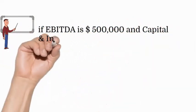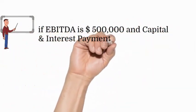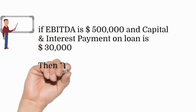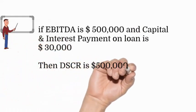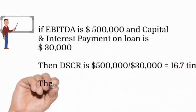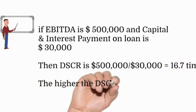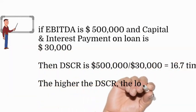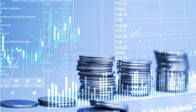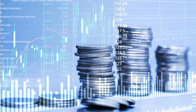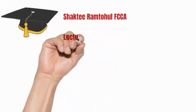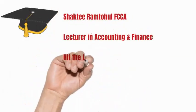But what exactly does that mean? If EBITDA is $500,000 and the capital and interest payment for a business is $30,000, then the DSCR is 16.7 times. The higher the DSCR, the lower the risk of default — it means the business has sufficient profits to pay its capital and interest payments.